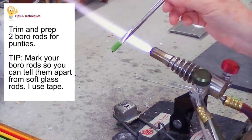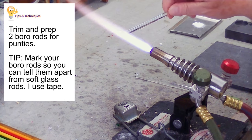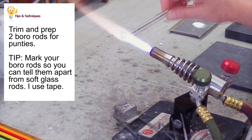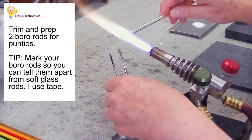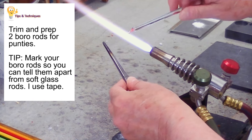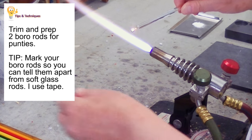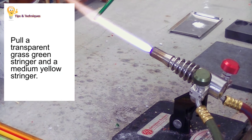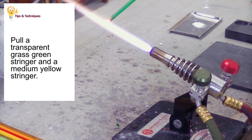First thing we're doing is trimming the boro punty. If you noticed, there was a piece of green tape on the glass. That's my way of indicating that this is boro and not soft glass, so I don't run the risk of confusing them and putting them in the same project.